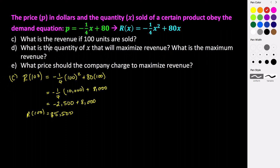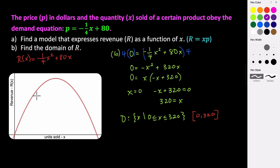Part D asks: what is the quantity of X that will maximize our revenue, and what is the maximum revenue? Now, if you recall, we have a parabola that opens down, so the revenue is at its highest right here — this is the maximum for our revenue. We want to figure out what value of X makes this true.